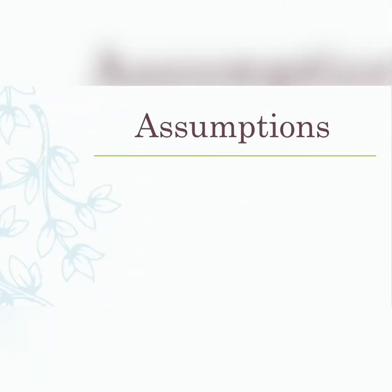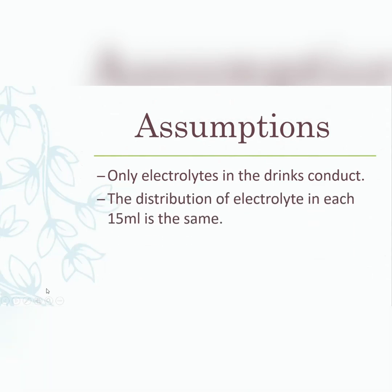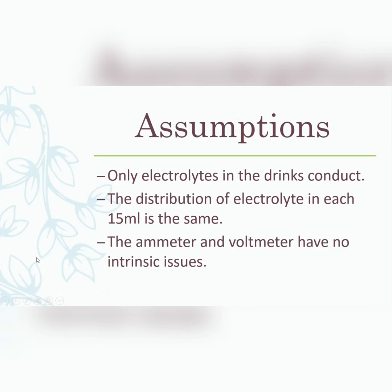Finally, your assumptions — things you assume to be true but may not be. You only need one: that only electrolytes in the drinks conduct electricity; that the 15 mils is representative of the whole drink sample; or that the ammeter and voltmeter have no calibration or electrical issues. Choose any one of those.